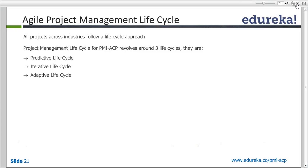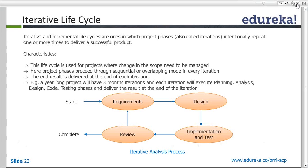The agile lifecycle revolves around three types: predictive lifecycle, iterative lifecycle, and adaptive lifecycle. With predictive lifecycle, time and cost are fixed to deliver a defined scope. Requirements are defined early and are not changed — if there is a change, it is held and addressed in another phase.